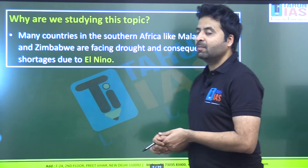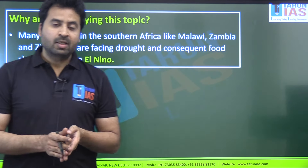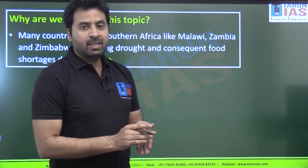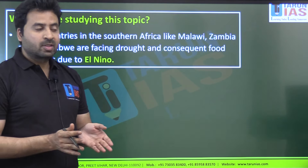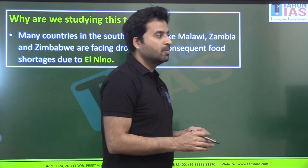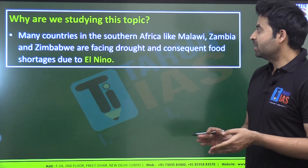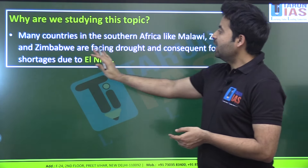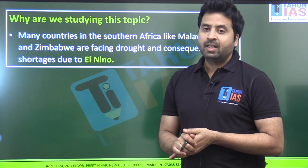Why are we studying El Niño in this class? According to the World Meteorological Organization, the El Niño phenomenon has started again after many years following the La Niña phenomenon. Because of El Niño, southern African countries like Malawi, Zambia, and Zimbabwe are facing drought, food shortages, and their leaders are asking the world for assistance.